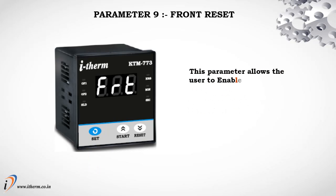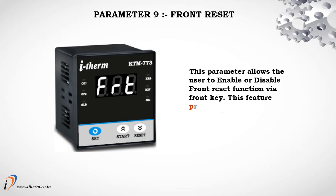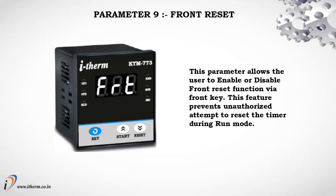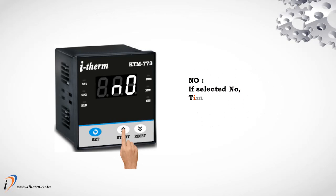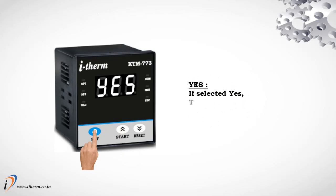Parameter 9: Front Reset. This parameter allows the user to enable or disable the front reset function via the front key. This feature prevents unauthorized attempts to reset the timer during run mode. If selected no, the timer cannot be reset through the front panel. If selected yes, the timer can be reset through the front panel.